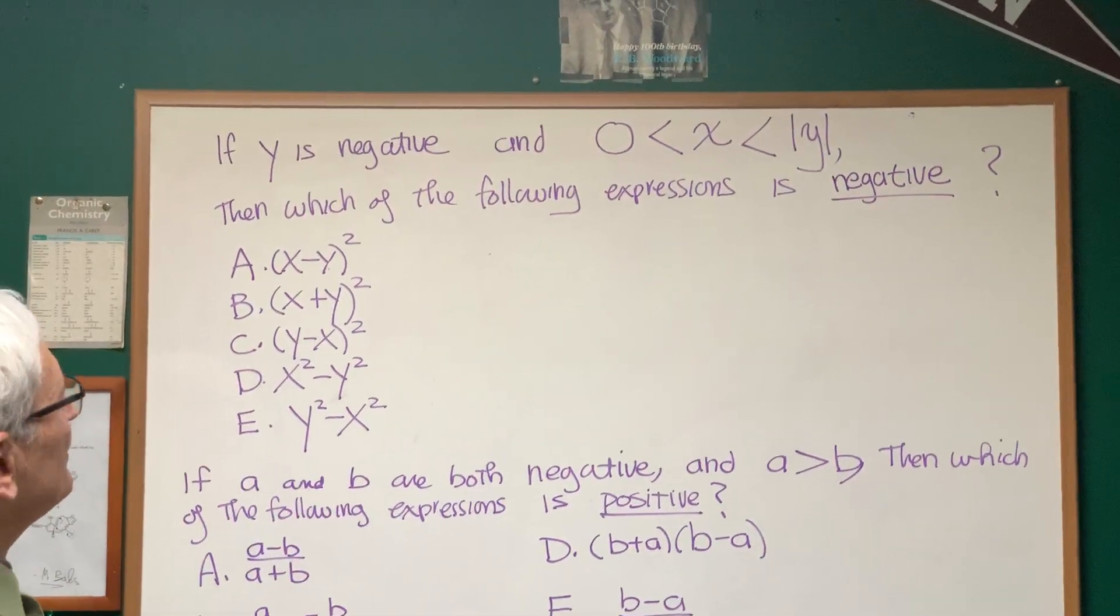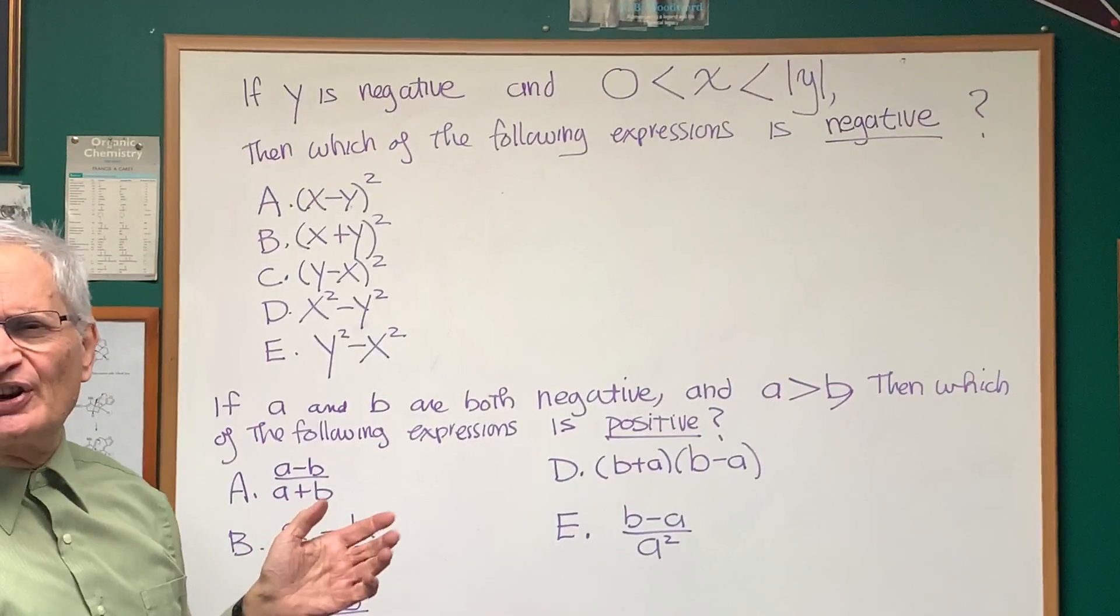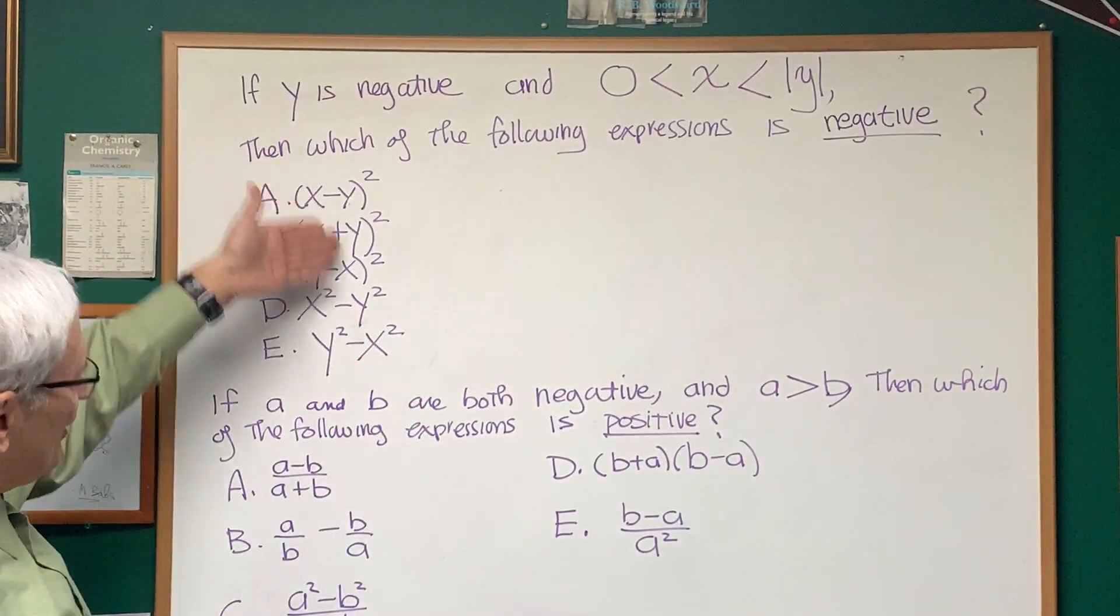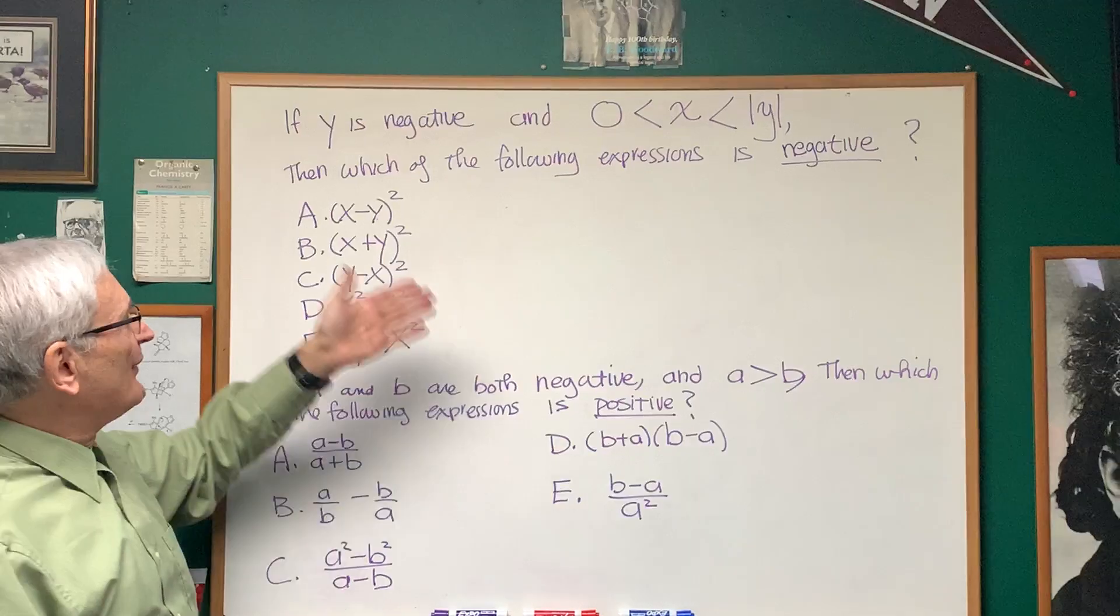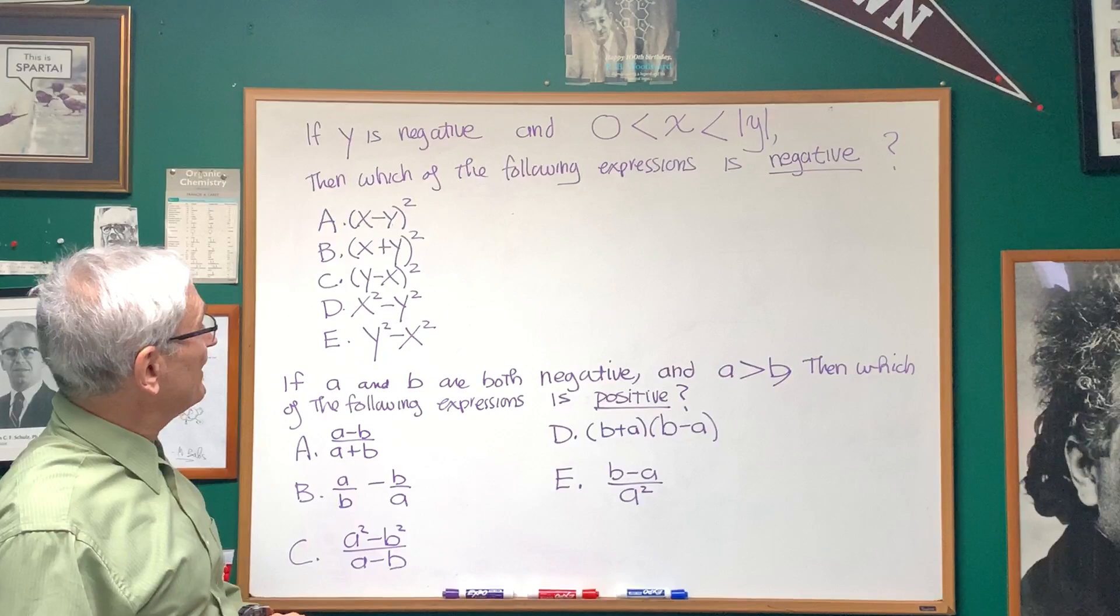Well we're looking for a negative quantity. Right away we can rule out choices A, B, and C. Why? Because there's a quantity squared. If the quantity is squared, it cannot be negative. So we can rule out A, B, and C.